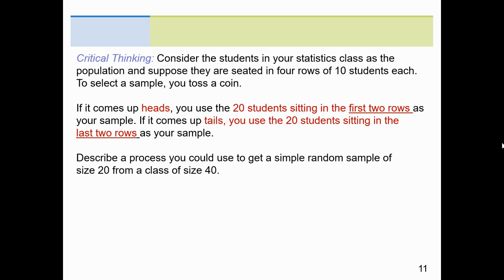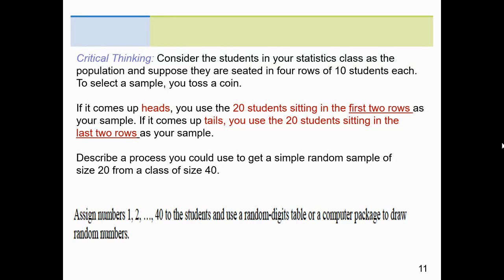Consider the students in your stats class. Same idea. Four rows, 10 each. Comes up heads. I get the first two rows. Tails, I get the last two rows. Describe a process where I could get a simple random sample size. What I could do is assign everybody a number. These 40 students, just count off. One, two, three. Everybody has a number from one through 40. Take some ping pong balls, label them, putting them into some sort of a hopper, spin it around and randomly draw out 20 numbers. I could have kids in the first, second, third, fourth. So, all right, every group of 20 would have the equal chance of being selected. That's how I would get around this and use simple random sample to get a size 20. Assign everybody a number and then randomly draw out 20 numbers.